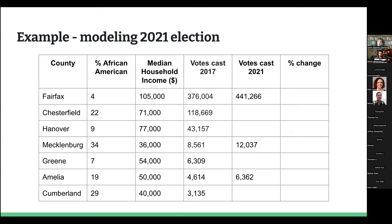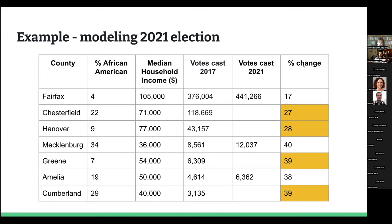What our model is doing is computing the percentage change in the counties that are observed. In Fairfax County there was a 17% increase, in Mecklenburg County 40%, and in Amelia County 38%. We feed that into a model — in this case a basic linear regression — using demographic data: the percentage of African-American residents and the median household income to predict this percentage change.